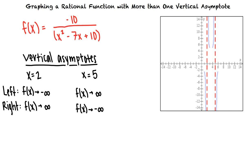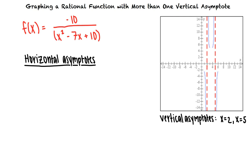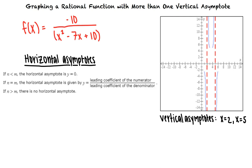Next, we need to determine the horizontal asymptotes. A rational function can have at most one horizontal asymptote. To find the horizontal asymptote, we compare the degree n of the numerator with the degree m of the denominator. If n is less than m, the horizontal asymptote is y equals 0. If n equals m, the horizontal asymptote is given by y equals the leading coefficient of the numerator divided by the leading coefficient of the denominator. And if n is greater than m, there is no horizontal asymptote.